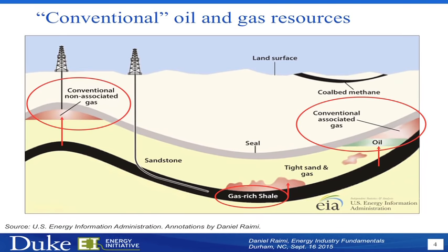This is a very quick description of conventional oil and gas development — the type that's been going on for something like 150 to 175 years in the United States. The layer of rock where the organic material is cooked is called the source rock, indicated here by the black layer, the shale. Shale is the source rock for most oil and gas. Over millions of years, some of the oil and gas in that source rock migrates towards the surface and becomes trapped by an impermeable layer of rock called a cap rock or a seal.